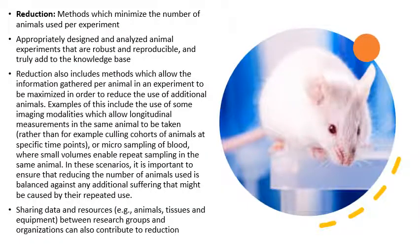The second R is reduction, which means minimizing the number of animals used per experiment. Appropriate experimental design will decrease the number of animals used while adding to the knowledge base. Reduction includes methods to maximize information obtained per animal — for example, imaging modalities that allow longitudinal measurements in the same animal. Sharing data and resources between research groups can also contribute to reduction.